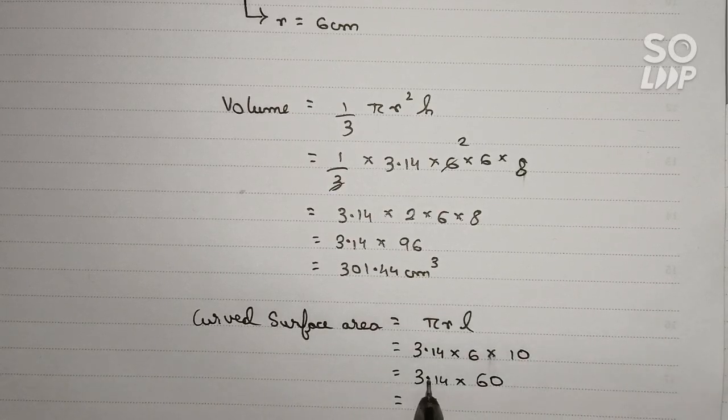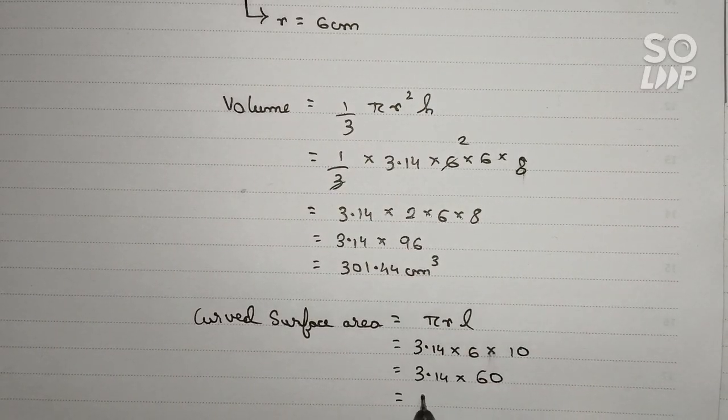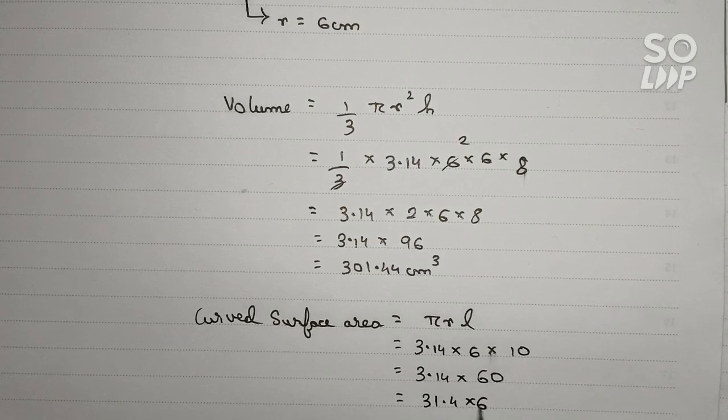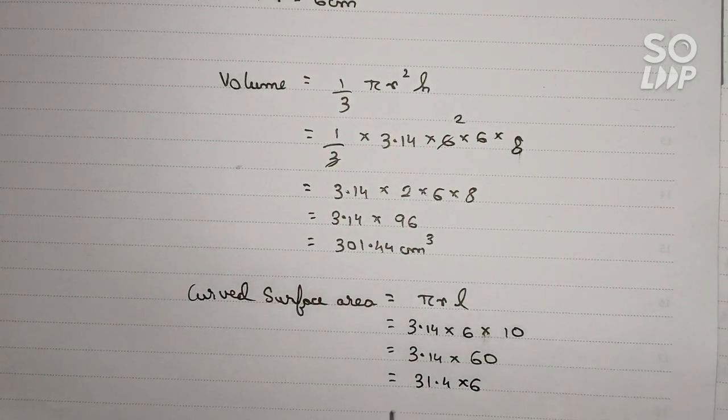If we remove this 0 we can move the decimal to 1 place, so 31.4 × 6. So if we multiply it we will get 188.4 centimeter square.